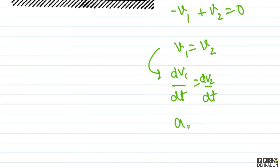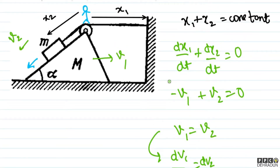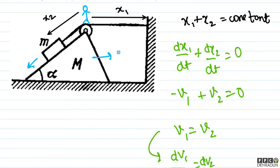So if we analyze this, the acceleration of capital M is a1 and the acceleration of small m can be worked out accordingly from the constraint.